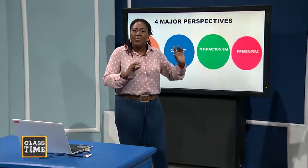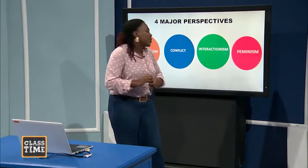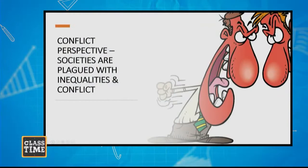Last week we looked at Emile Durkheim and functionalism, and how they compared society to the human body. Today, we're going to look at the conflict perspective. Now, the conflict perspective, unlike the functionalist perspective, believes that societies are plagued with inequalities and conflict.